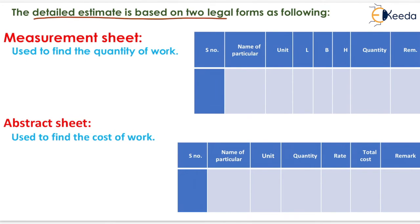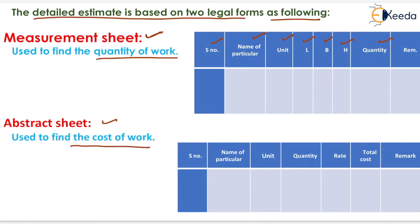The detailed estimate is based on two legal forms: the measurement sheet, in which the quantity of work is recorded with columns for serial number, name of particulars, unit, length, width, height, quantity, and remark; and the abstract sheet, which includes serial number, name of particular, unit, quantity, rate from the Schedule of Rates (SOR), total cost calculated by multiplying quantity by unit rate, and remarks.